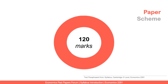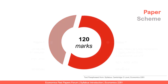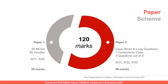The paper scheme has two papers — paper one and paper two — for a total of 120 marks. Paper one is 30 MCQs, 45 minutes, worth 30 marks, and the objectives tested are knowledge, understanding, and a little analysis. Paper two gives a case study with short and long questions. It is divided into two parts: section A and B. From 2020 onwards, all three assessment objectives will be judged in paper two, which is worth 90 marks.